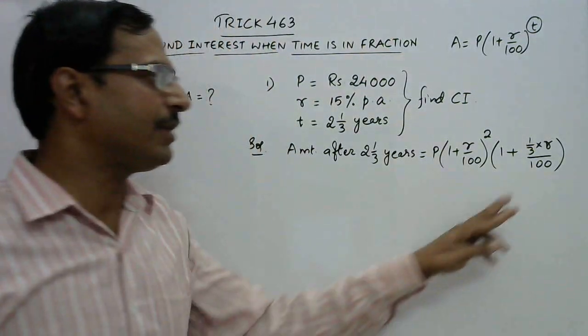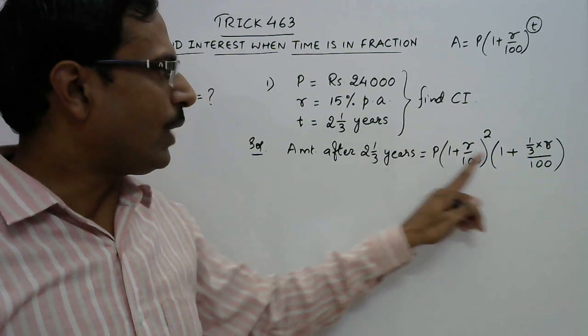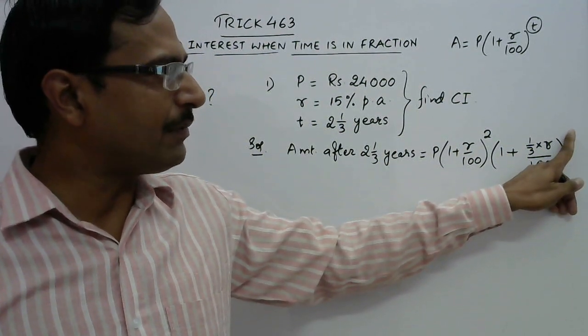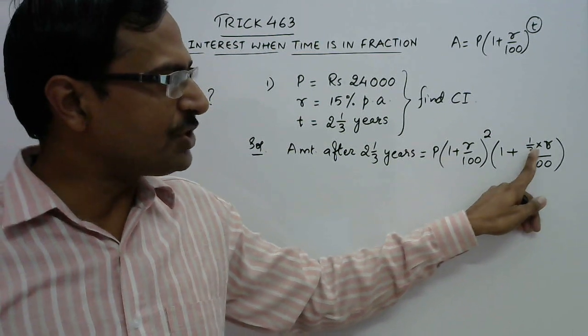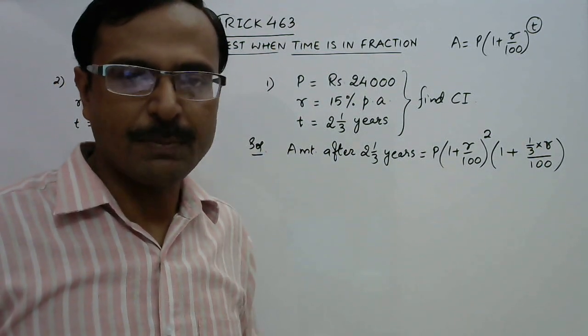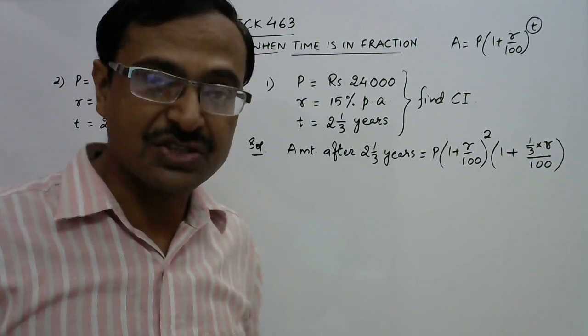So 2 years and this 1/3: 1 plus 1 third of r upon 100. Now this is the way we tackle fractional years. For 1/3 year, 1 plus r upon 100 will be written but the power will not be 1/3, that power 1/3 will be the coefficient of r. This is the trick for finding amount or compound interest in case of fractional years.